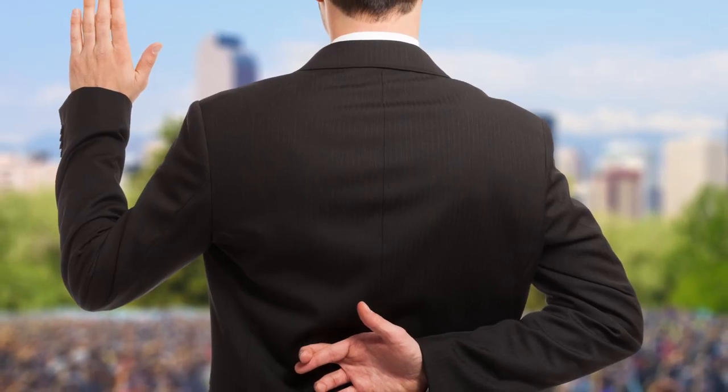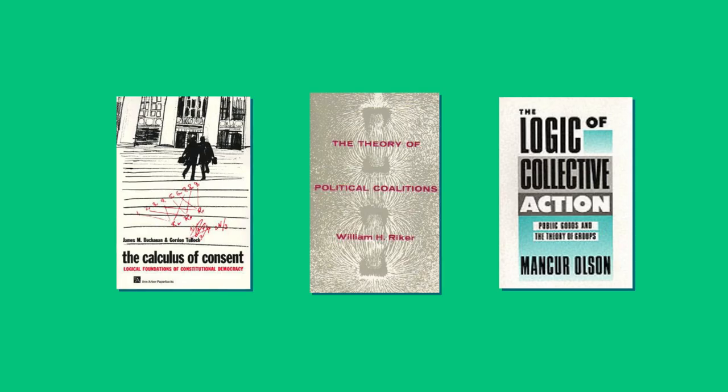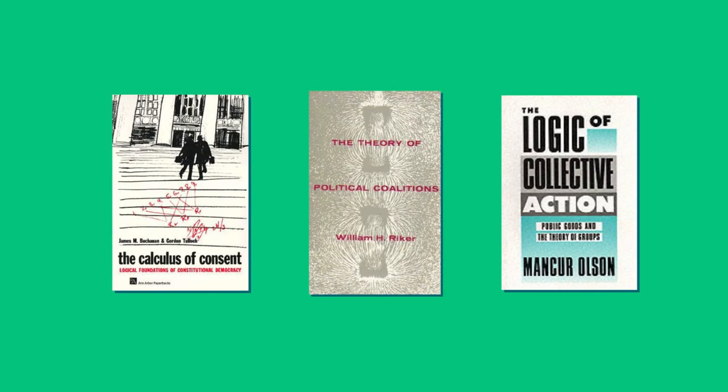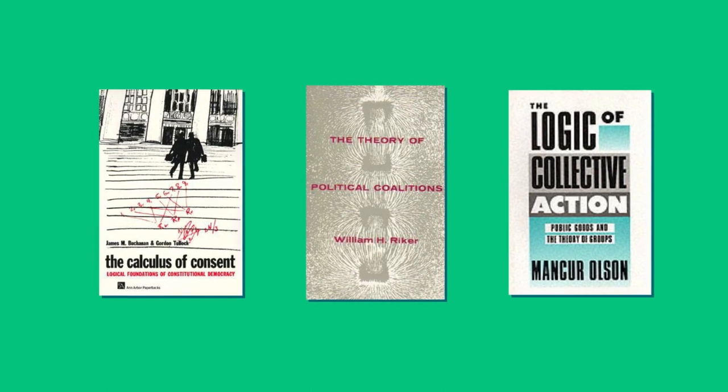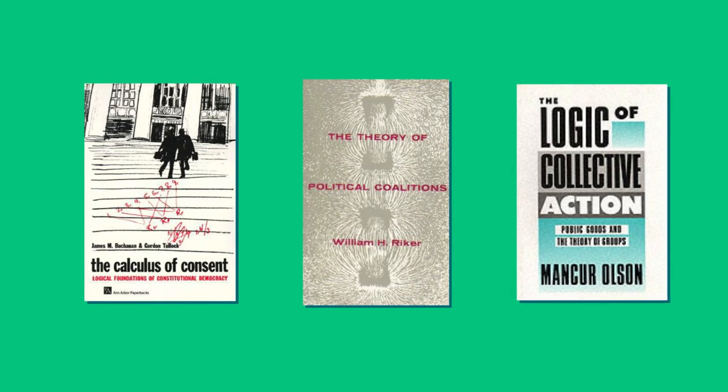Now, you might say, isn't it obvious that politicians act in their self-interest? And to some extent it is. But when Buchanan and Tullock published The Calculus of Consent in 1962, and William Riker wrote The Theory of Political Coalitions, and a little bit later The Logic of Collective Action by Mancur Olson, this approach to understanding politics was really a revolution. Even today, it's very common for people — even economists and political scientists — to put forward ideas which could only work if the government were a benevolent dictator.